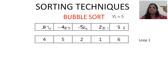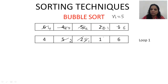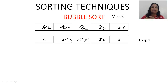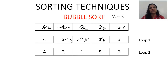The list isn't sorted yet, so we continue from the first element again. In pass 2: the comparison is between 4 and 5 — no swap needed since 4 is already smaller. Then 5 is compared with 2, so 2 comes here and 5 goes there. Then 5 is compared with 1, so 1 comes here and 5 goes there. We don't compare with the last element because it's already the biggest. Every pass, we shift one element to the left — that's the result of pass 2.